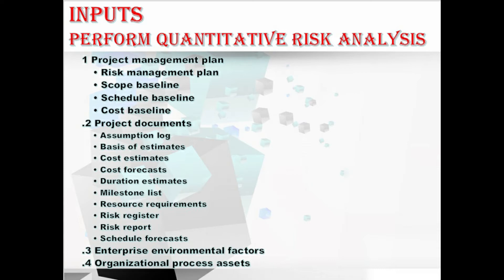Cost estimates provide the starting point from which the cost variability is evaluated. For cost forecast, forecasts such as the project estimate to complete (ETC), estimate at completion (EAC), budget at completion (BAC), and to-complete performance index (TCPI) may be compared to the results of a quantitative cost risk analysis to determine the confidence level associated with achieving these targets. Duration estimates provide the starting point from which the schedule variability is evaluated. Significant events in the project define the schedule targets against which the results of a quantitative schedule risk analysis are compared to determine the confidence level associated with achieving these targets.